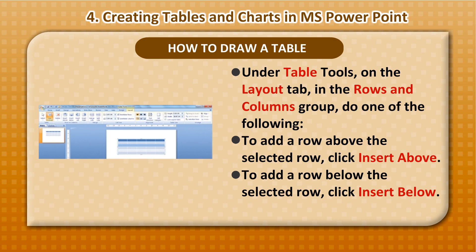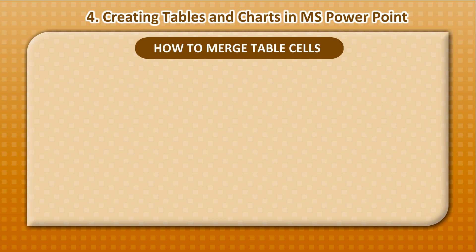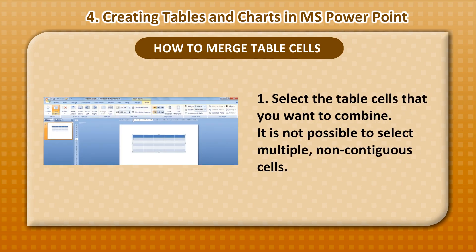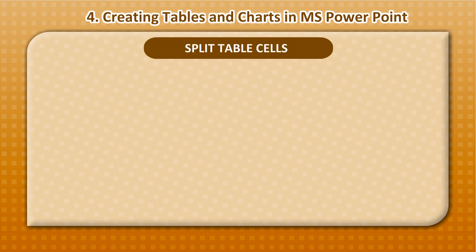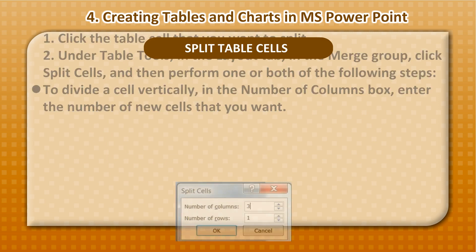How to Merge Table Cells: 1. Select the table cells that you want to combine. It is not possible to select multiple non-contiguous cells. 2. Under Table Tools, in the Layout tab, in the Merge group, click Merge Cells.